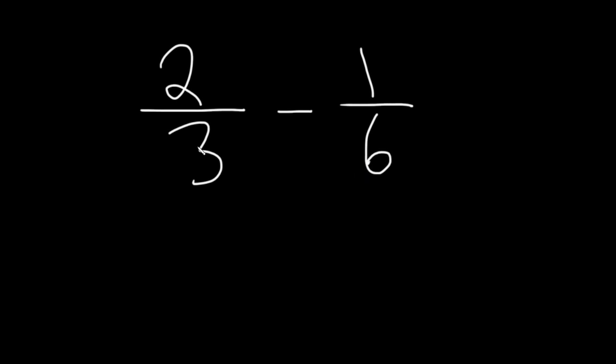So let's go ahead and turn this 3 into a 6. We can do that by multiplying by 2 over 2. We're basically multiplying by 1 in a clever way. And that allows us to turn this 3 into a 6. 2 times 2 is 4. 2 times 3 is 6. So now we have 4 over 6 minus 1 over 6.